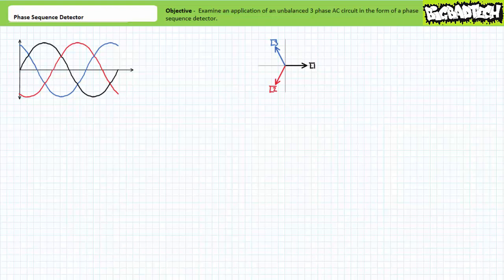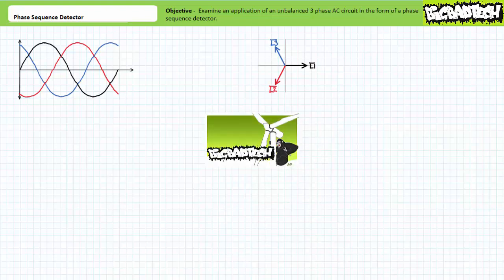We'll examine an application of an unbalanced three-wire Y configuration that can be used to detect phase sequence. This lecture operates under the presumption the viewer has more than a passing familiarity with three-phase AC and unbalanced Y configured loads, as illustrated in the introduction of three-phase AC and unbalanced Y configurations lectures, both available at the Big Bad Tech channel. If you haven't watched these lectures yet or don't recall their contents, please take the time to do so now.